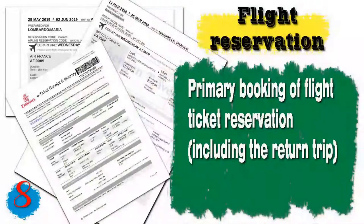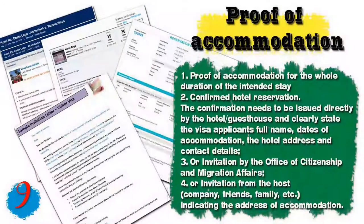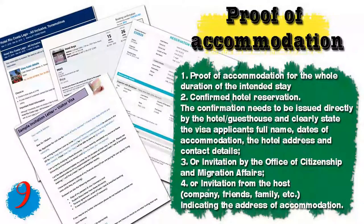Eighth, you will need a flight reservation. A preliminary booking of your flight ticket, including the return trip, must be presented. In some cases for some countries this ticket must be confirmed. Ninth, you will need proof of accommodation for the whole duration of your intended stay — a confirmed hotel reservation clearly stating the applicant's full name, dates of accommodation, the hotel address, and contact details. If you don't have a hotel reservation, you will need an invitation from the Office of Citizenship and Migration Affairs or from a host such as a company, friends, or family.